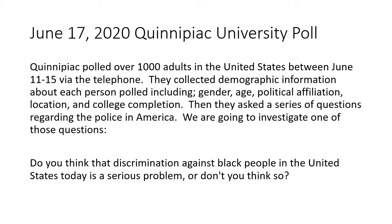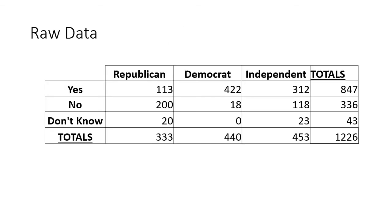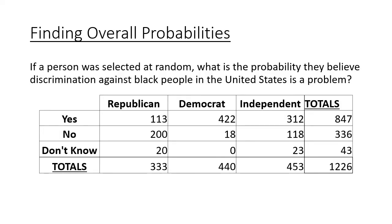Those demographic categories are how we separate the contingency table — for example, are answers to opinion questions different depending on gender, or does age affect how you feel about certain topics? The specific question we're going to look at is: 'Do you think that discrimination against black people in the United States today is a serious problem?' We'll look at how people answered yes, no, or didn't know, broken down by political affiliation: Republican, Democrat, or Independent — which is actually the biggest category.